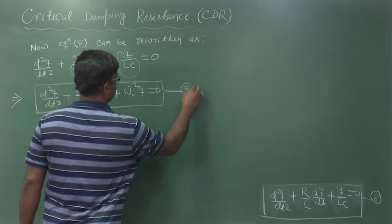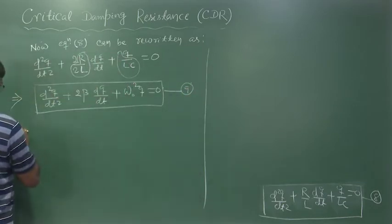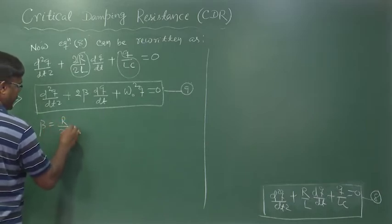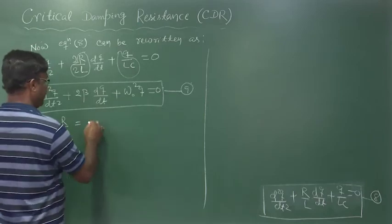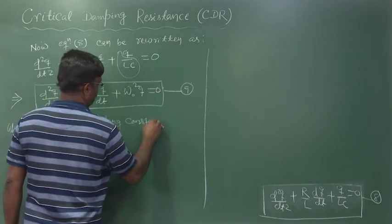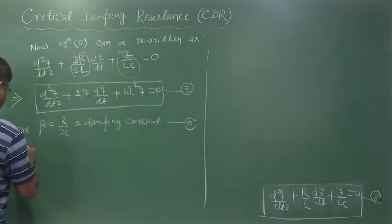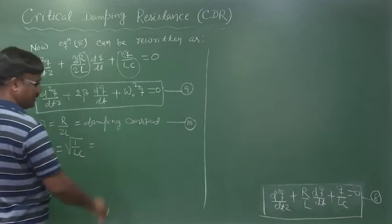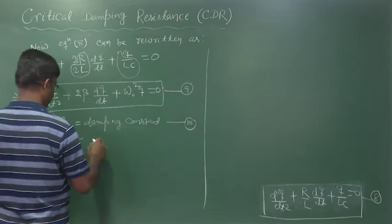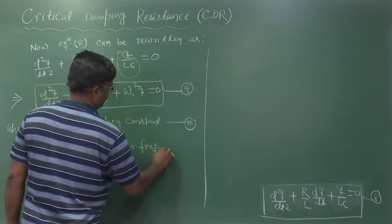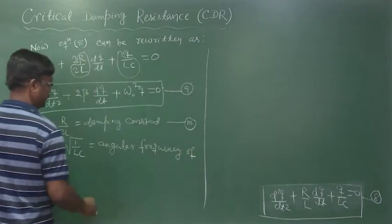This is equation number 9, where beta is equal to R/2L, which is the damping constant, and omega₀ is equal to √(1/LC), which is the angular frequency of oscillation.